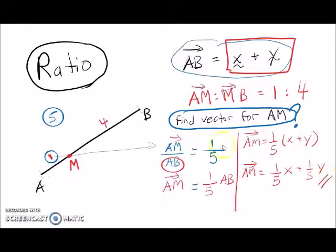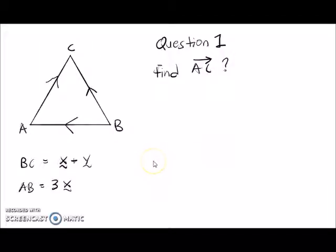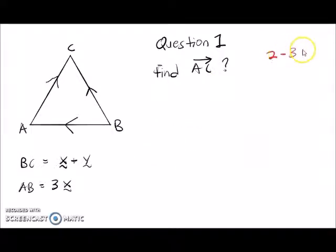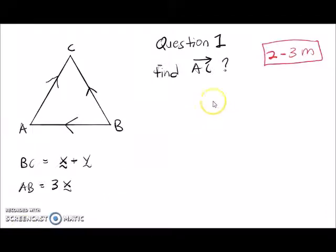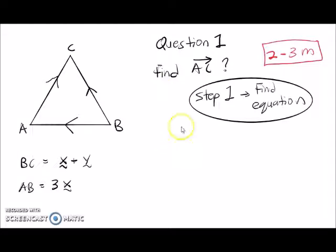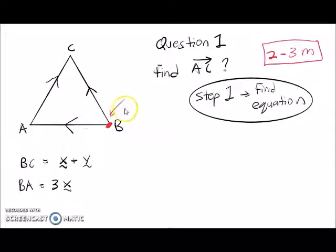This is your answer for the first question. Normally this question will have two to three marks in your IGCSE questions. Now we have to find the equation — to find the equation we have to find the shortcut first. The shortcut is given by looking at the arrows.